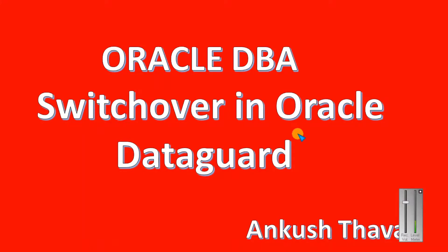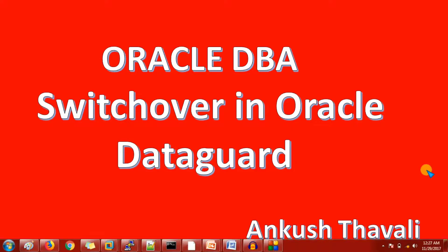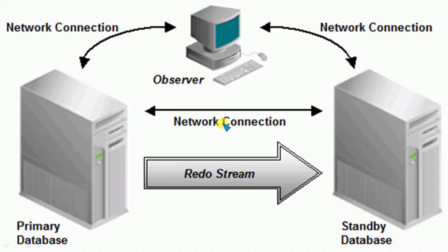Hello friends, my name is Avgush. In today's session we are going to discuss switchover in Oracle Data Guard. We are using the Oracle Data Guard setup mainly for high availability, or in other terms we call it disaster recovery. Whenever something is happening on the primary location, we should have a secondary location available so that the user will not know the primary database server is down.